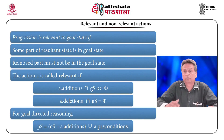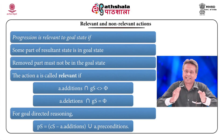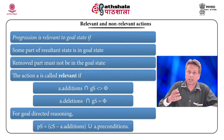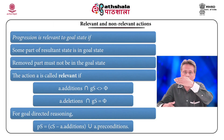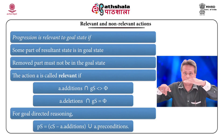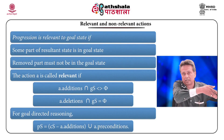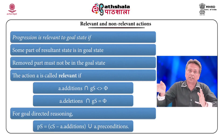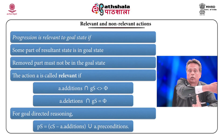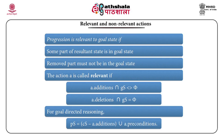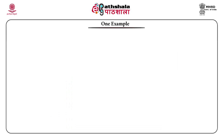For goal-directed reasoning, the opposite applies. The previous state equals the current state minus the action's additions, then union with the action's preconditions. This is because the action always applies in the forward direction — whatever was added must be removed to find the previous state, and the preconditions must also be present. So: previous state = current state − a.additions ∪ a.preconditions.